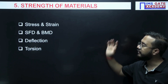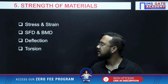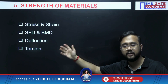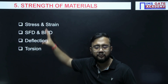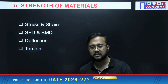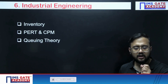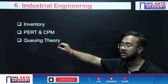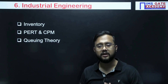Subject number five is Strength of Materials — a very, very important subject. Questions on stress-strain, principal stress-strains, Shear Force Diagrams (SFD), Bending Moment Diagrams (BMD), deflection, and torsion. These four topics are where you can expect numericals in Strength of Materials. Subject number six is Industrial Engineering. Direct numericals on Inventory, PERT and CPM, and Queuing Theory are the top three topics from which you can directly expect questions.